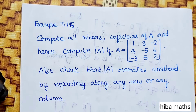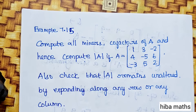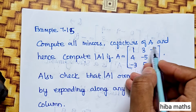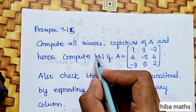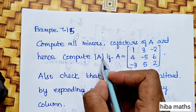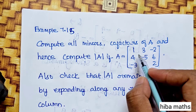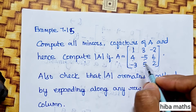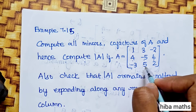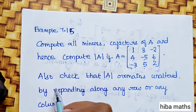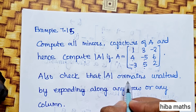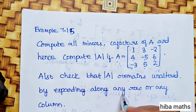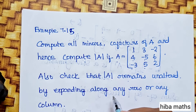Example 7.15: compute all minors and co-factors of A, and hence find modulus of A, where A equals [1, 3, -2; 4, -5, 6; -3, 5, 2]. Also check that modulus of A remains unaltered by expanding along any row or any column.